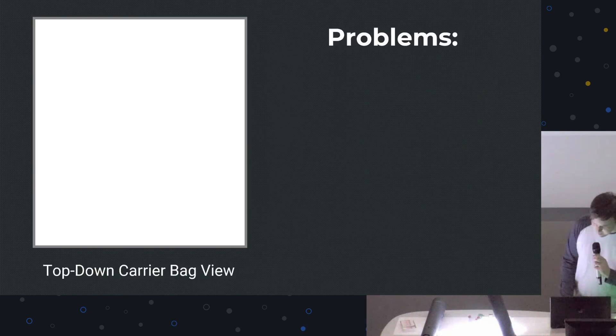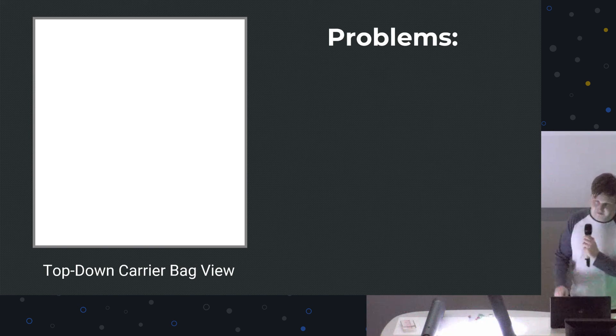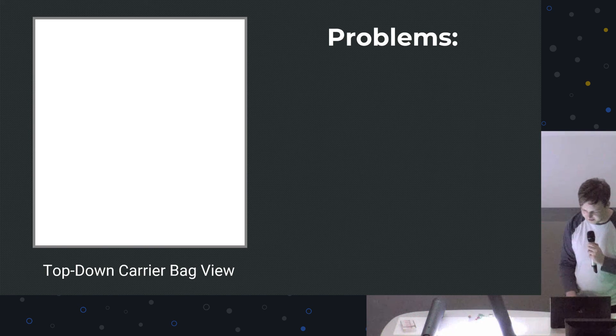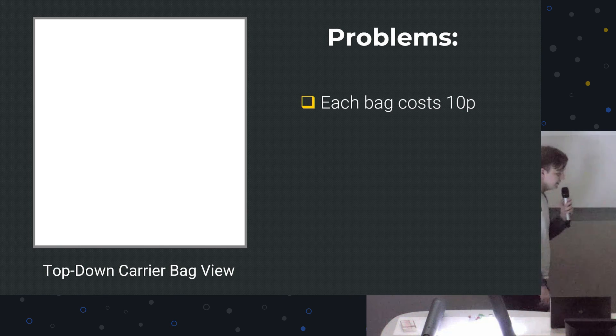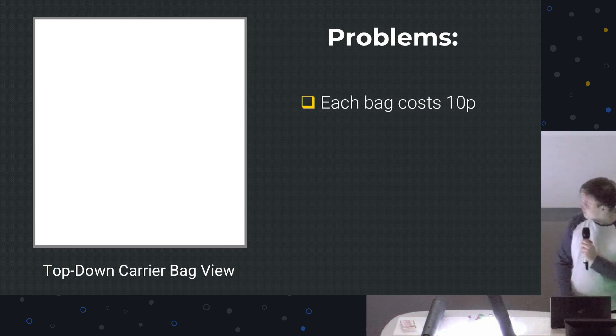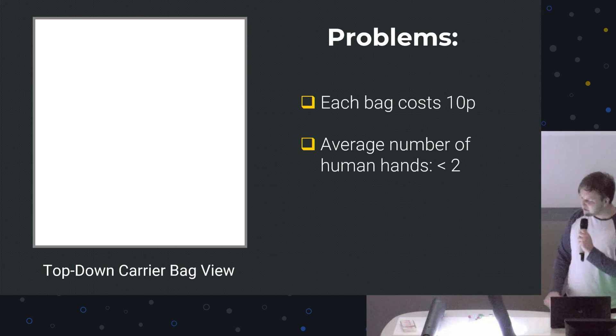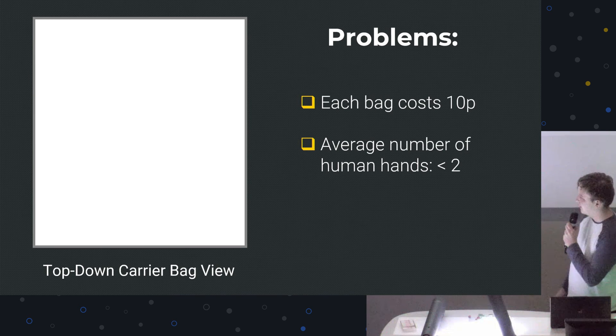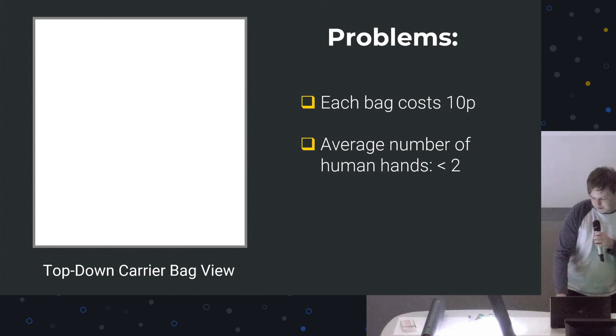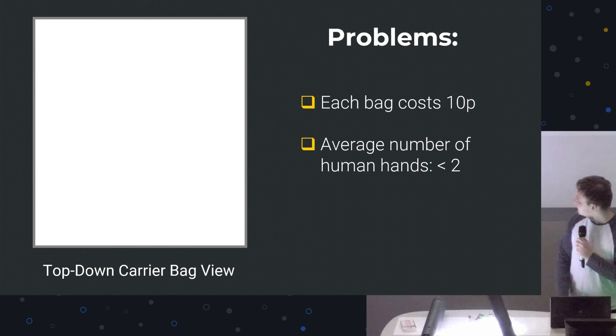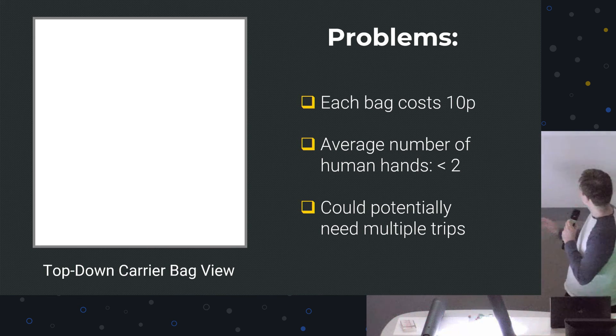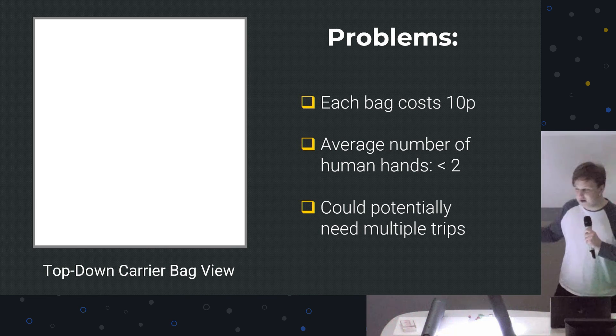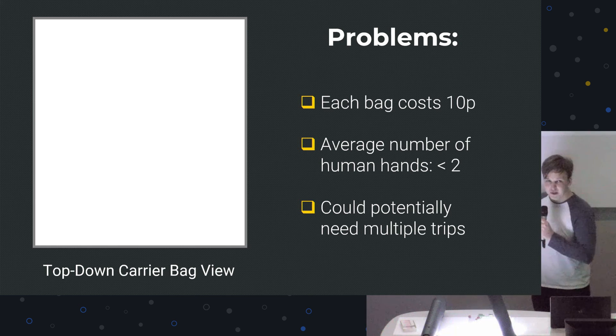We're going to try and use that to get our Weetos back to the house. But there are a few problems. This is a very accurate representation of our bag, by the way. The first problem is that each bag, unfortunately, costs 10p because, again, unfortunately, we are living in the UK. The second problem is the average number of human hands is ever so slightly less than two, if you really think about it. We could potentially need multiple trips. And that takes time. And, you know, time is something that's very precious. So we're going to try and fit in as many Weetos as we can into our very expandable carrier bag.